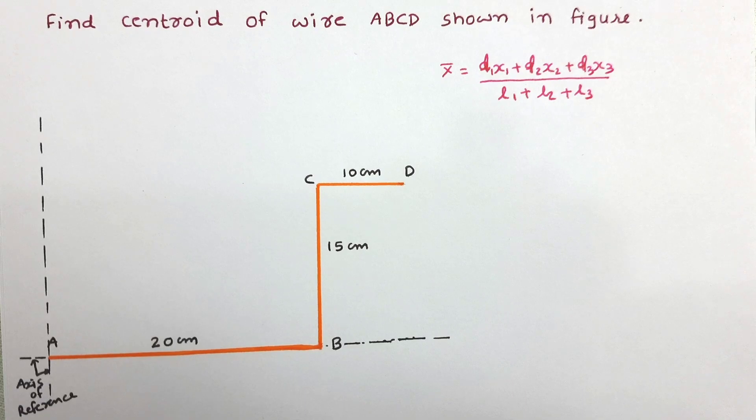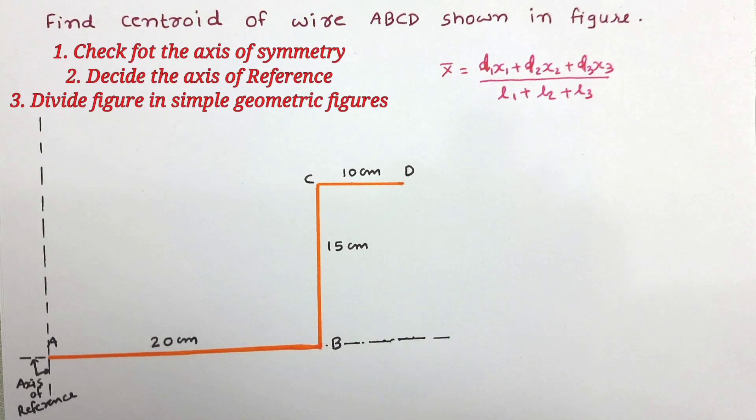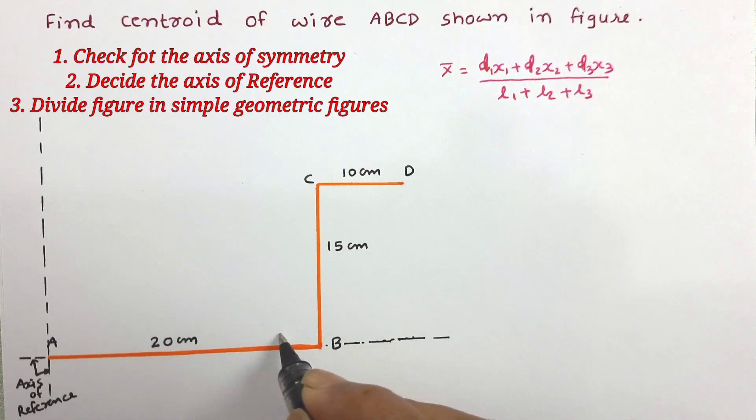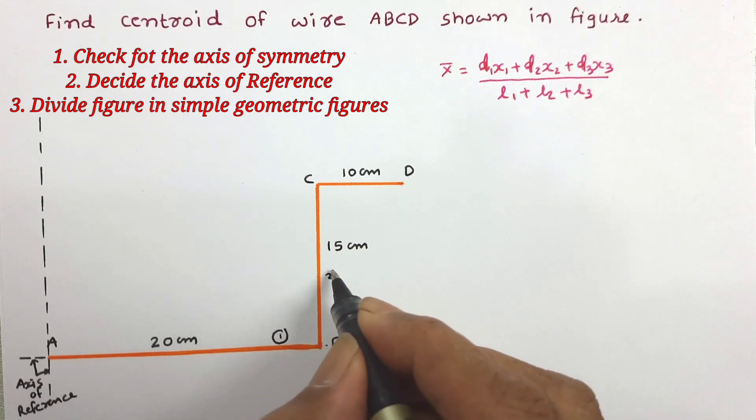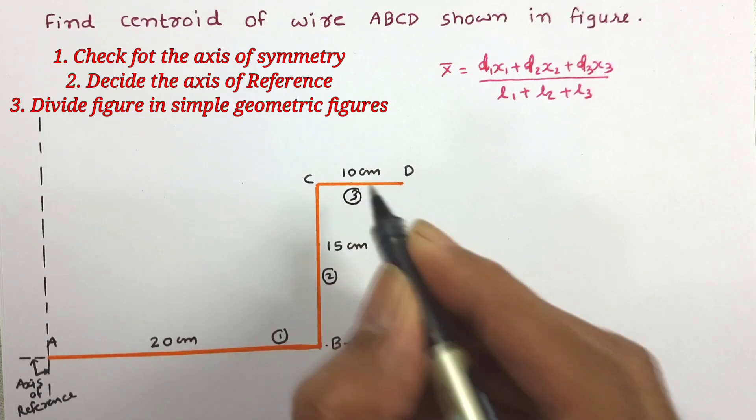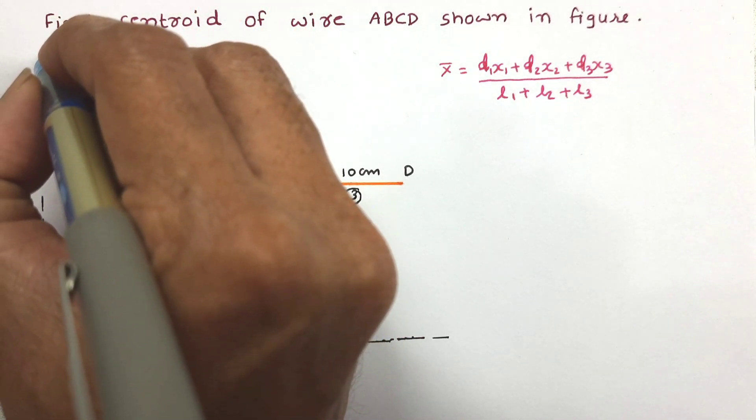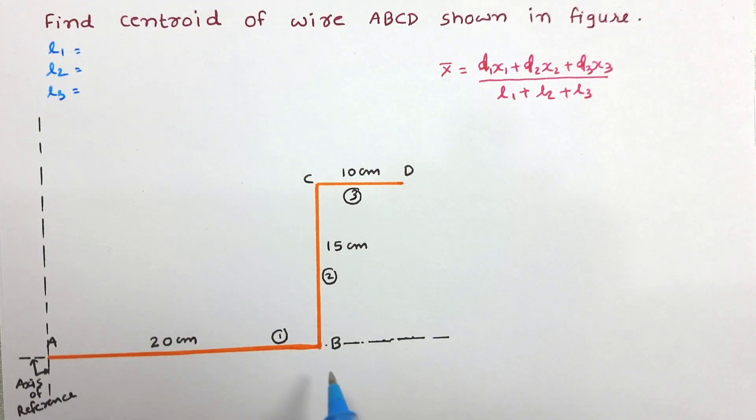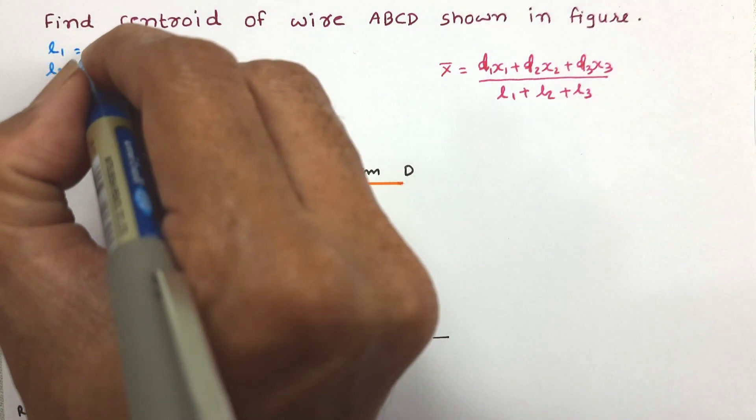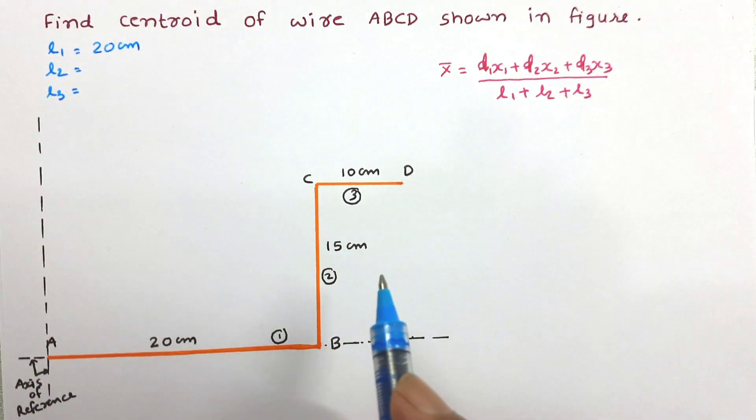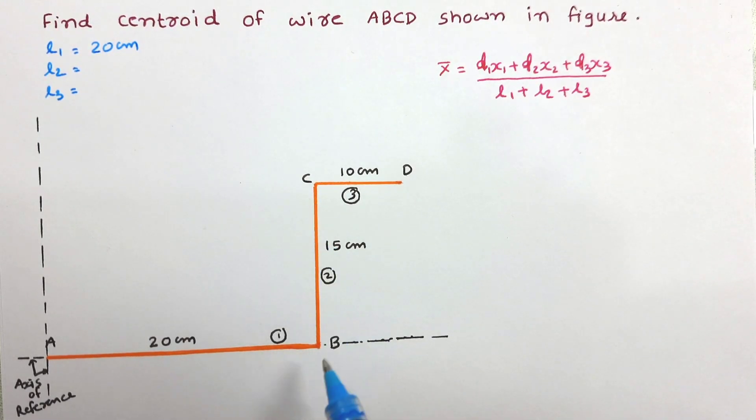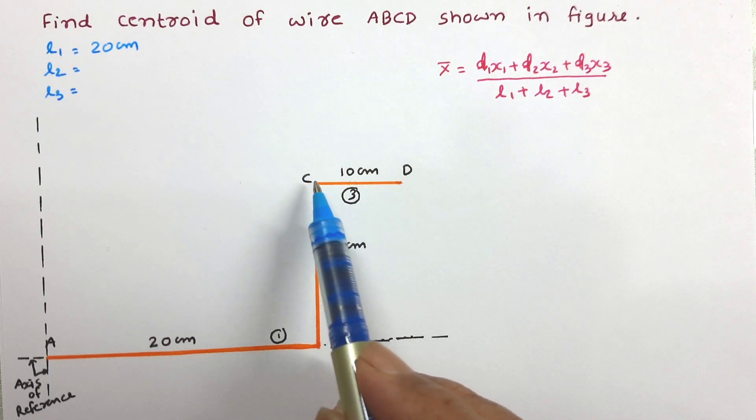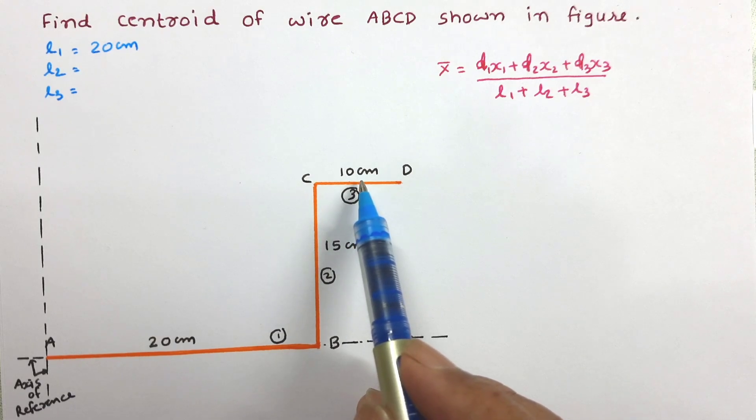So first of all we have to determine l₁, l₂, l₃ and x₁, x₂, x₃. From the figure, the length of each three portions are very clear. Let us say wire AB is part 1, wire BC is part 2, and wire CD is part 3. So l₁, that is length of part 1 AB, is 20 cm. Length of wire 2, that is BC, is 15 cm, and wire CD, the third part, is 10 cm.